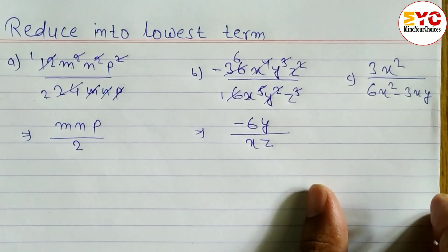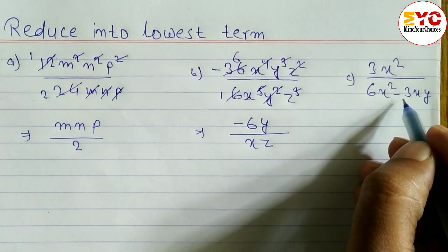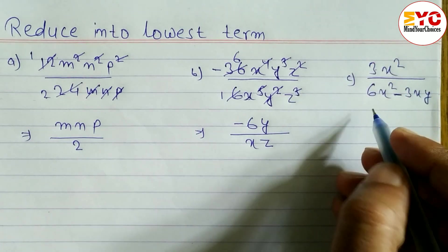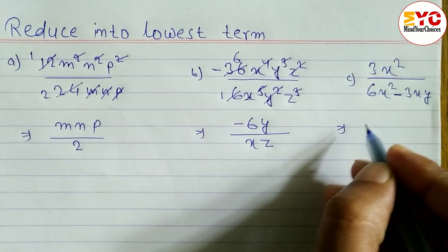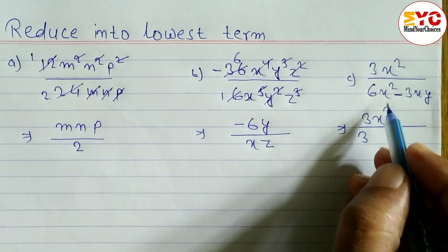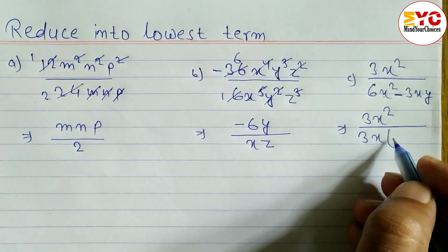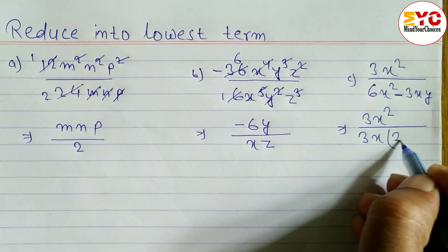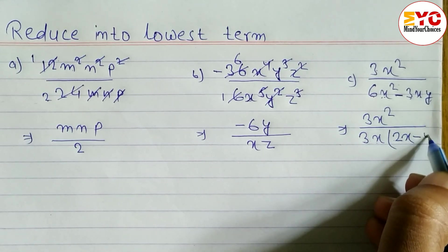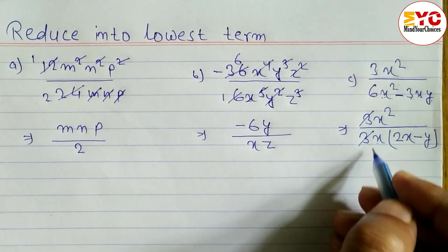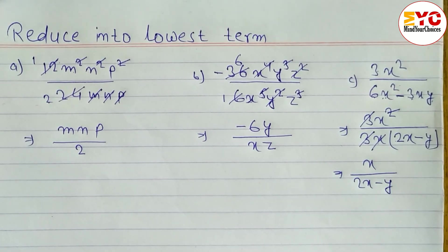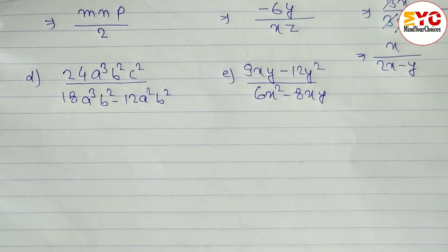In the next question we cannot directly cancel 3 and 6 because there is a minus sign and there are two terms in the denominator. So first we take common factors. From 3x² and 3x, the common is 3x. We get 3x(x - y) in the numerator, and after cancellation the answer is x over (2x - y).